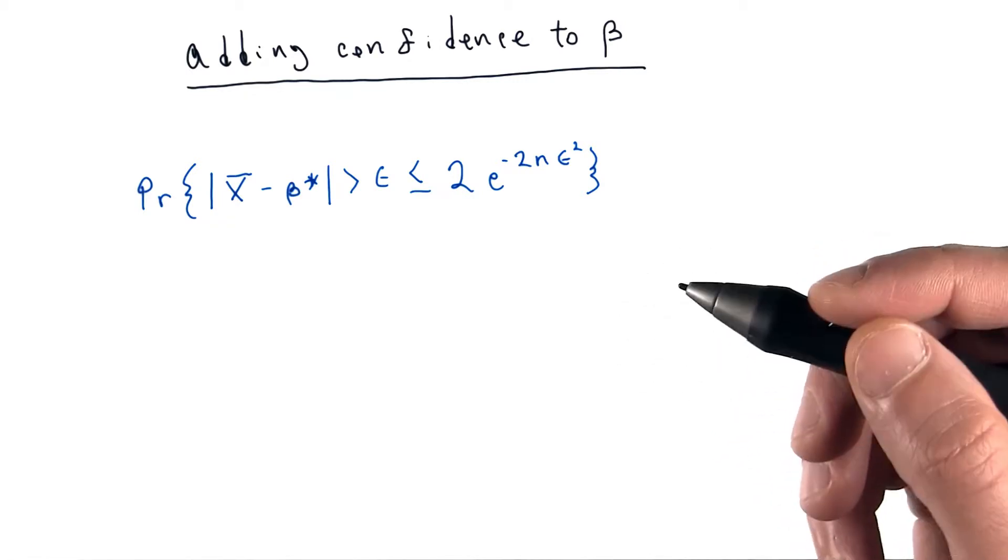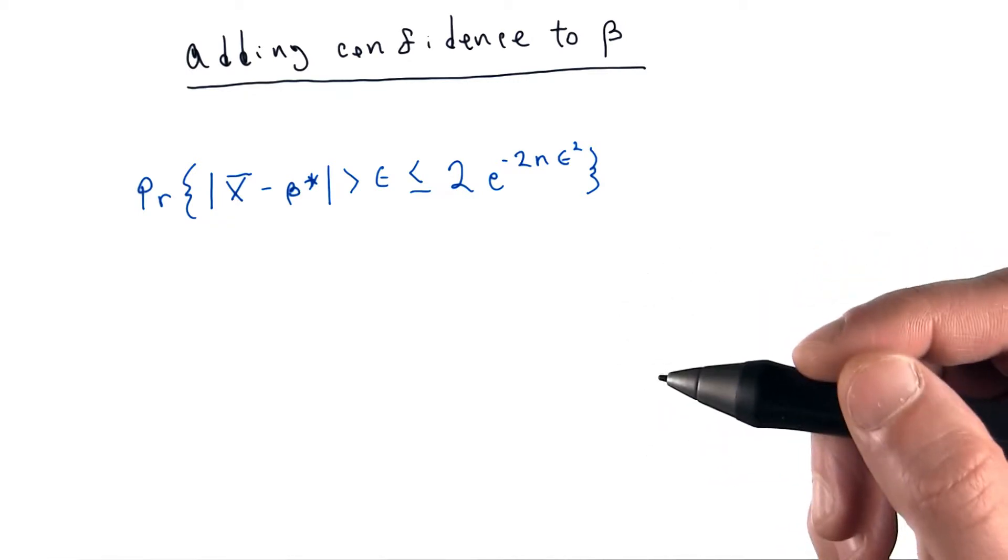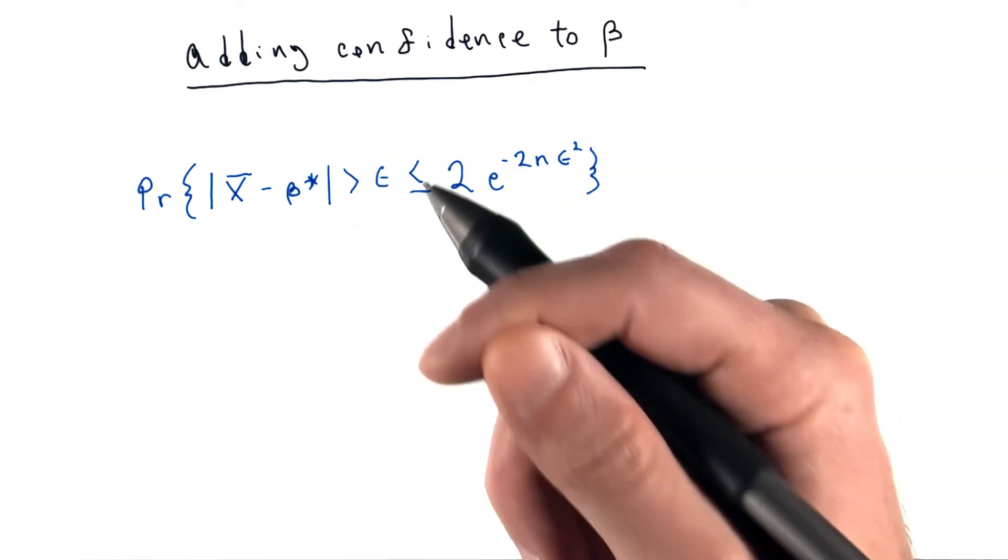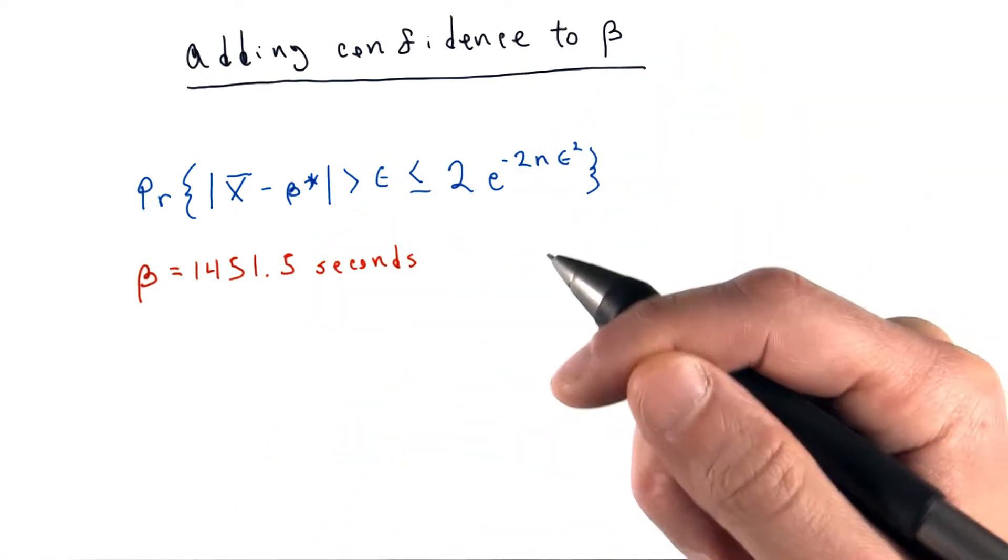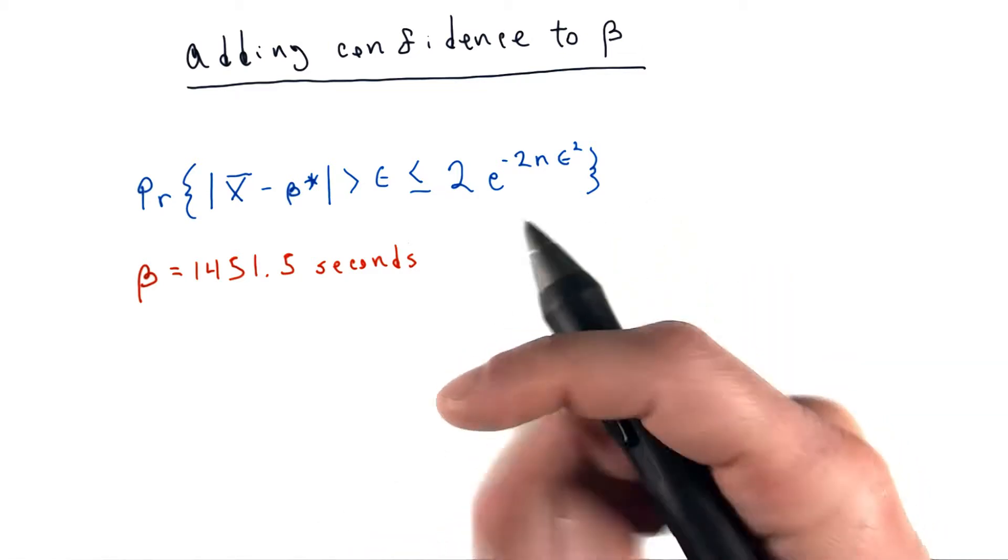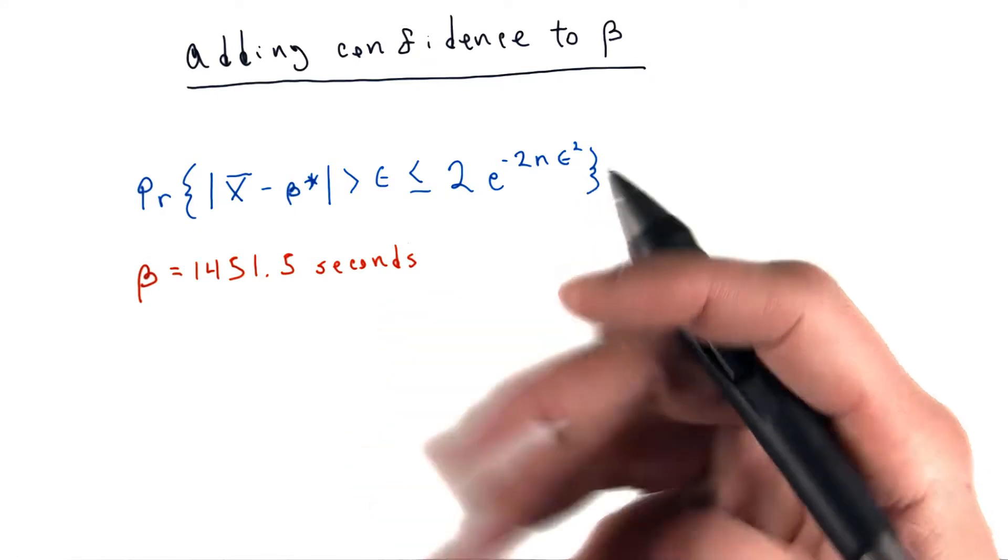Let's apply that to our own problem and find a confidence bound for our beta parameter. Recall that the beta value from our exponential fit was 1,451.5 seconds. Let's use Hoeffding's inequality to put a 95% confidence interval around this value.